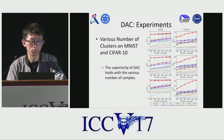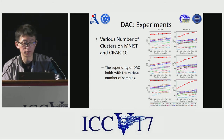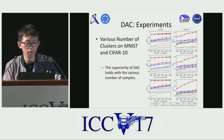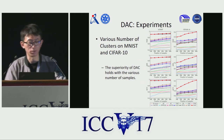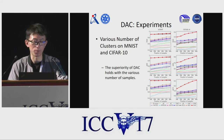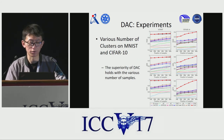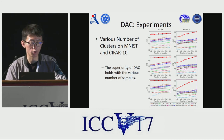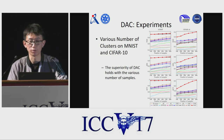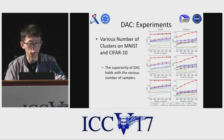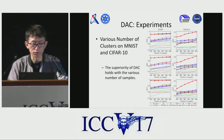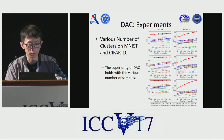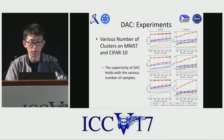Additionally, the superiority of DAC still holds with different numbers of samples. For the CIFAR-10 dataset, we observe that the performance of DAC increases consistently when more samples are included. However, DAC reaches a saturation state by using all samples on MNIST. This is to be expected, since sufficient samples are needed for mapping more complex images from visual features to label features.